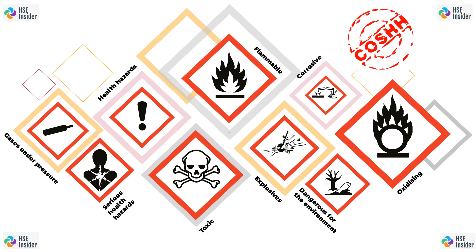COSHH regulations are crucial for protecting workers from the hazards of substances in the workplace. By assessing the risks, implementing control measures, and providing training, monitoring, and reviewing procedures, employers can create a safe work environment and prevent potentially harmful exposure to employees. Compliance with COSHH regulations not only protects the health and safety of employees but also helps businesses and companies avoid costly incidents, lawsuits, and damage to their reputation.